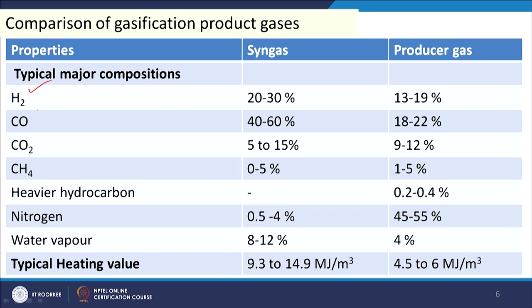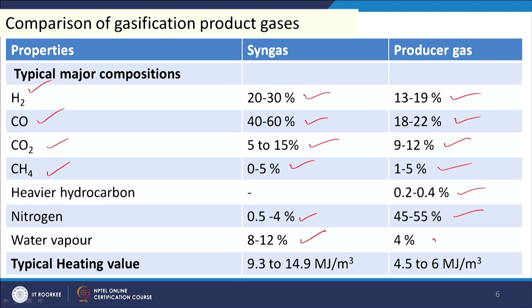The composition of syngas and producer gas: hydrogen is 20–30% for syngas and 13–19% for producer gas; CO is 40–60% for syngas and 18–22% for producer gas; CO₂ is 5–15% for syngas and 9–12% for producer gas; CH₄ is 0–5% for syngas and 1–5% for producer gas. Nitrogen in syngas is 0.5–4% and 45–55% for producer gas. Water vapour is 8–10% for syngas and 4% for producer gas. Heating value: syngas is 9.3–14.9 MJ/m³ and producer gas is 4.5–6 MJ/m³.